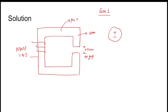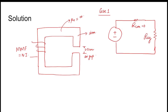In Case 1, reluctance of core is zero because mu_r is infinite. So R_core = 0. R_air_gap can be written as: length of air gap divided by mu_0 times area of cross-section of core. The permeability in the air gap is mu_0.